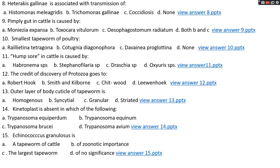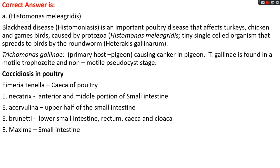Question number eight: Heterakis gallinae is associated with the transmission of options A, Histomonas meleagridis; options B, Trichomonas gallinae; option C, coccidiosis; options D, none. The right answer is option A, Histomonas meleagridis. Histomonas meleagridis causes histomoniasis, known as blackhead disease, mainly affecting turkeys but also chickens and gamebirds. It is caused by the protozoan Histomonas meleagridis, which is transmitted by the roundworm Heterakis gallinarum.